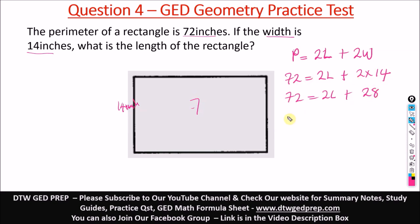Let's take 28 here and leave just 2L here. We're looking for L. Taking 28 here, we have 72, taking a positive 28 down here, it becomes a negative 28, equal to 2L. And what is 72 minus 28? That would give us 44, equal to 2L.